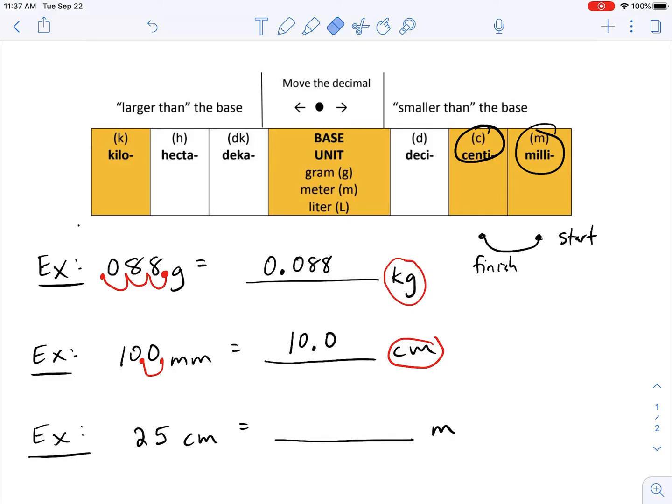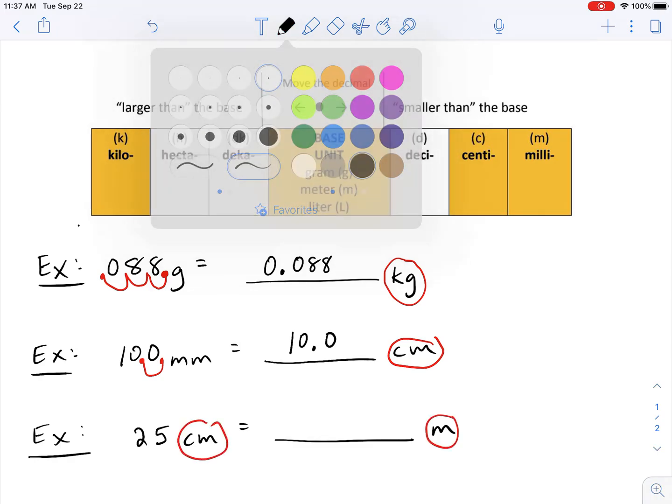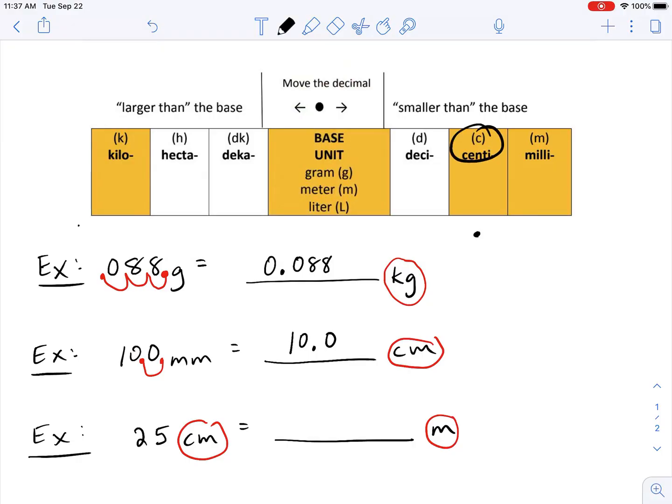All right, last example here. 25 centimeters. So I know I'm going from centimeters to plain old meters. So C is my prefix. So I'm starting here. And meters is my base unit, just one letter. So I'm going to finish here.